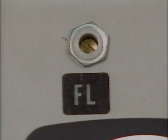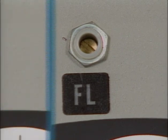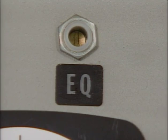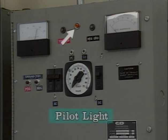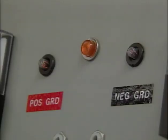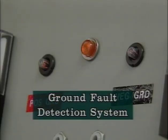In addition to the float equalize switch or timer, a potentiometer is provided for adjusting the float charge voltage, and another potentiometer is provided for adjusting the equalized charge voltage. A charger may also have a pilot light that is typically on when there is an AC input to the charger.